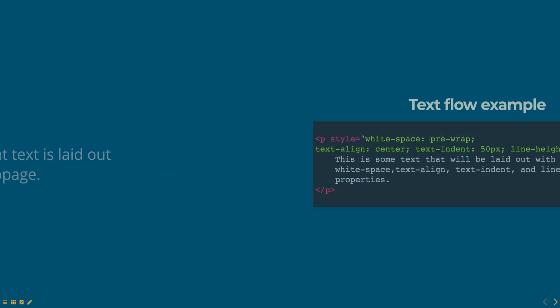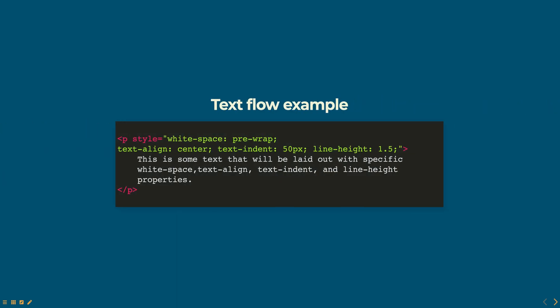Here is an example of text flow. In this example, the paragraph element has a white-space property of pre-wrap, a text-align property of center, a text-indent property of 50 pixels and a line-height property of 1.5. These properties will determine how the text is laid out within the paragraph element.